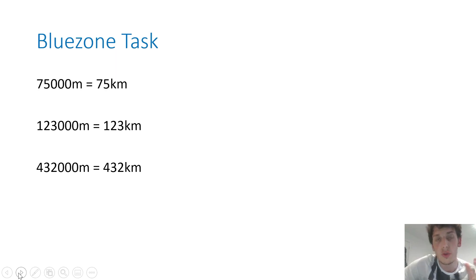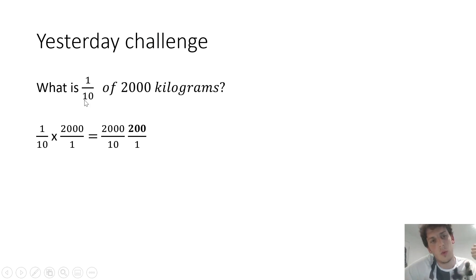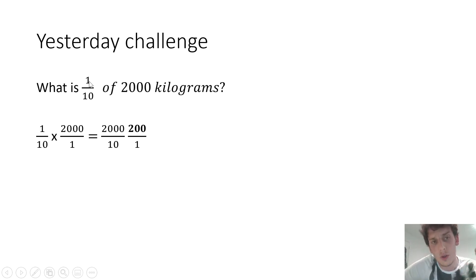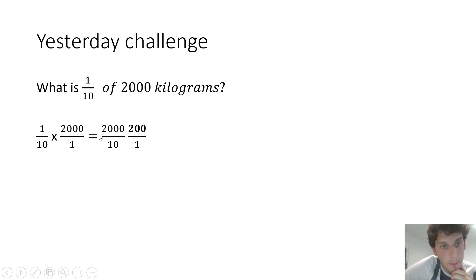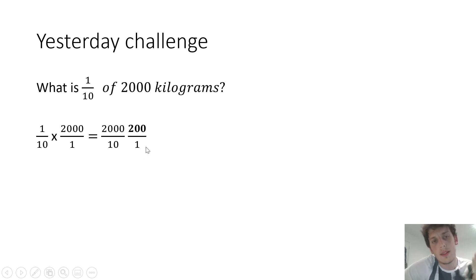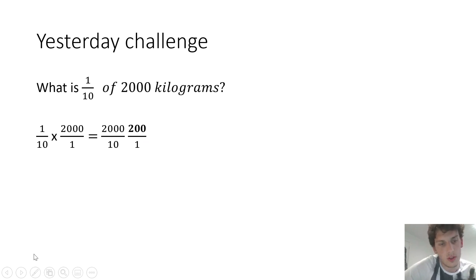Blue zone, we're going to go through the challenge from yesterday and then I'm going to give you your challenge for today. Your challenge from yesterday was to work out what one-tenth of 2,000 kilograms is. I hope what lots of you did was realize that is actually just a fraction of an amount question. All we want to do is one-tenth of 2,000. Remember, 'of' is the same as multiply. So one-tenth times 2,000 over 1 equals 2,000 over 10. We simplify by making it 10 times smaller, which gives 200 over 1. So one-tenth of 2,000 is 200 kilograms.